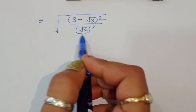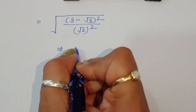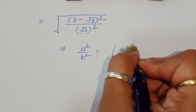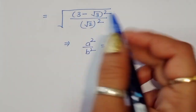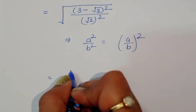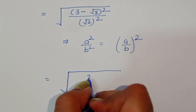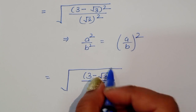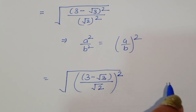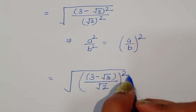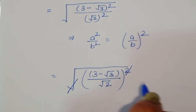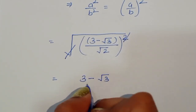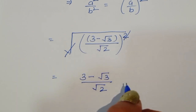Now using the formula a squared upon b squared equals (a upon b) whole squared, we can write this as (3 minus square root of 3) divided by square root of 2, the whole squared. Since we have a square outside and a square root, the square cancels from the square root, giving us (3 minus square root of 3) divided by square root of 2.